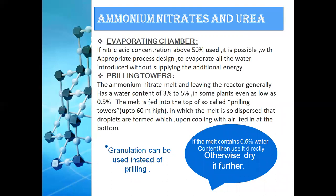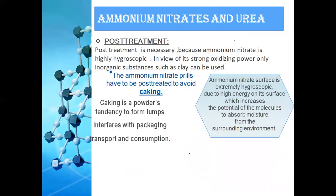After the circulating reactor, the ammonium nitrate solution enters the evaporating chamber, where water is removed without supplying additional energy. After leaving the evaporating chamber, it enters the prilling tower with a water content of less than 0.5%. In the prilling tower, the melt is pumped to the top and dispersed so that droplets form, which then cool upon contact with air fed in from the bottom. Granulation can be used instead of prilling to produce larger particles.